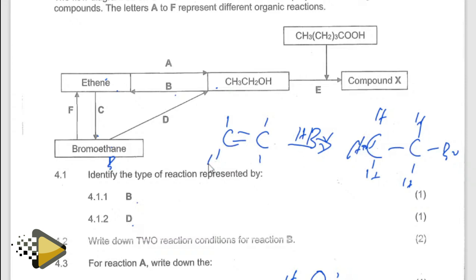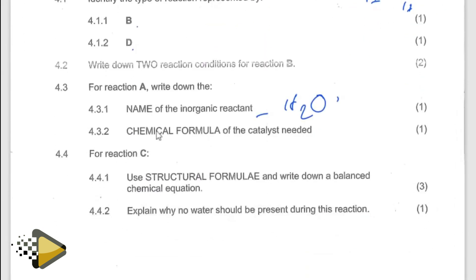You put hydrogen, you put hydrogen, you put hydrogen, you put hydrogen. We give you a mark there, a mark there, a mark there. Then they're saying the chemical formula of the catalyst — so you're done with that. Then structural formula: explain why no water is needed.